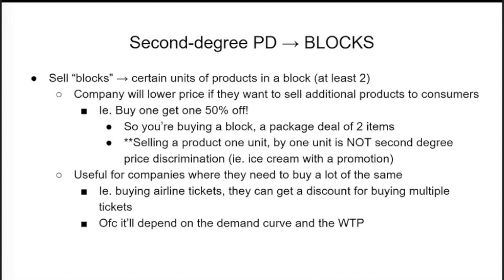Second degree price discrimination focuses on blocks — certain units of production considered as a block (at least two units). The company lowers the price to sell additional products: for example, buy two Ben & Jerry's ice creams and get a third one free. Selling a product one unit at a time is not second degree price discrimination. The discount only applies when purchasing the block. This is useful for companies wanting customers to buy more of the same product, like discounts for multiple airline tickets, and depends on the demand curve and willingness to pay.